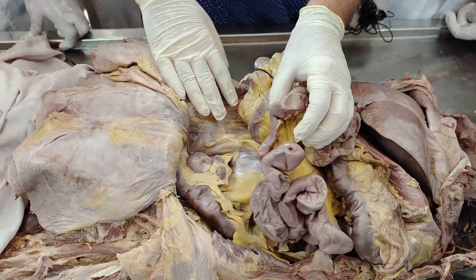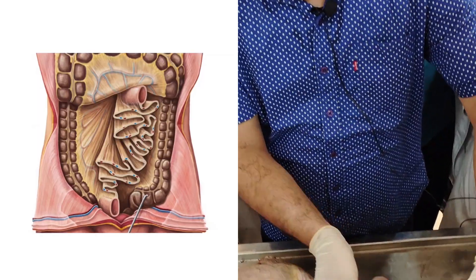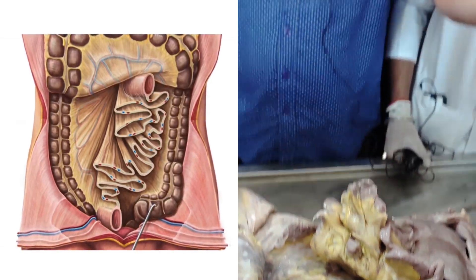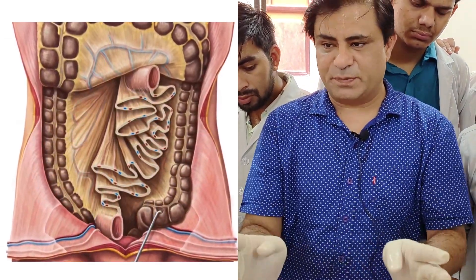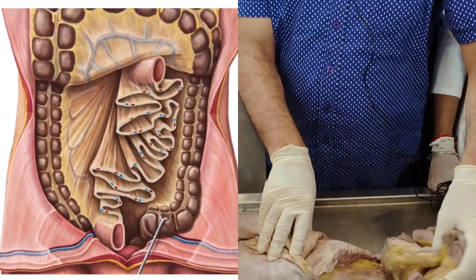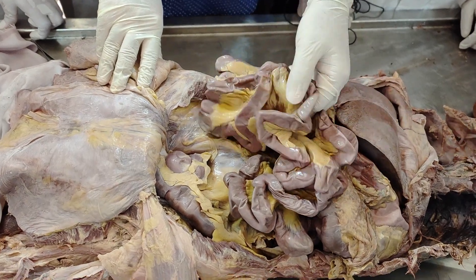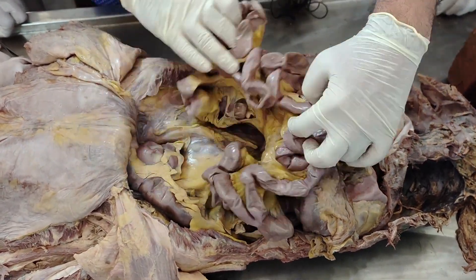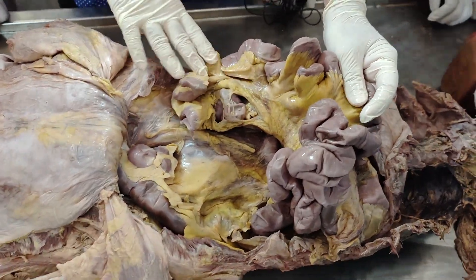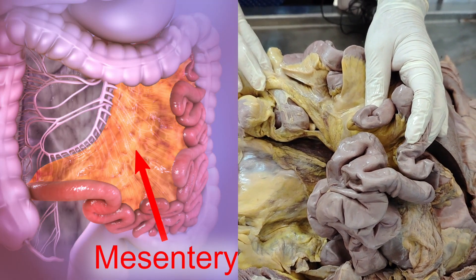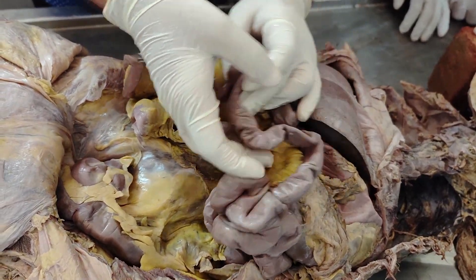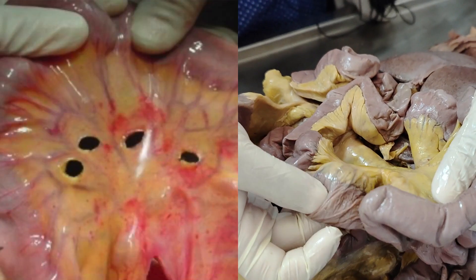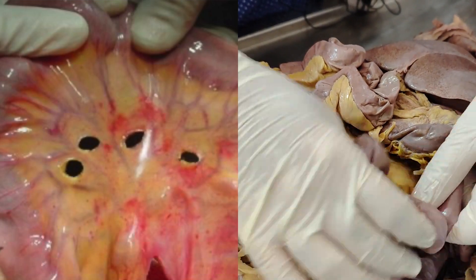The length of the jejunum and ileum is around six meters, so you can see a lot of foldings here — the loops are pretty mobile. The mesentery is also studded with a lot of fat. The fat is more towards the root of the mesentery and towards the lower portion; more fat is there. In the upper portion, nearer to the small intestine, you sometimes find windows — small openings — which you may find along the upper portion of the mesentery.